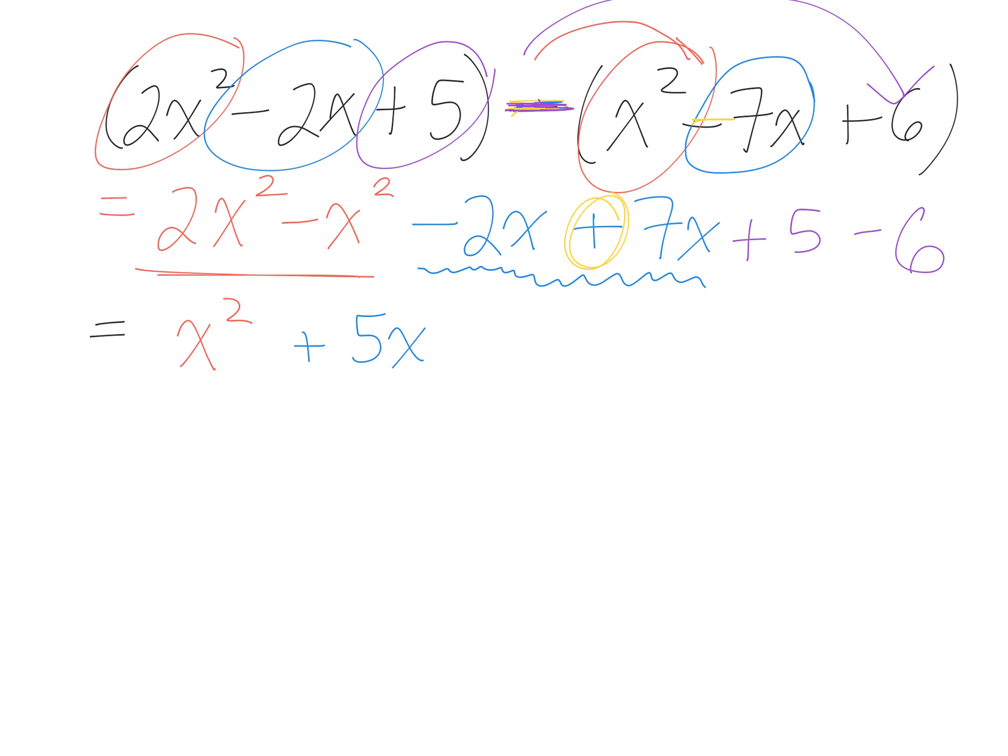If you need to use a calculator, positive 5 taking away 6, going backwards, where do I end up? Good. Negative 1. This is the final answer. X squared plus 5x, take away 1.